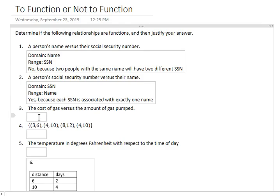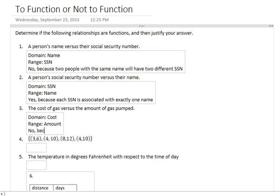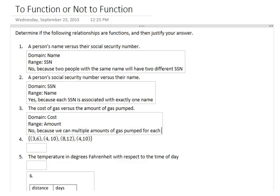The cost of gas versus the amount of gas pumped. Our domain is the cost, our range is the amount of gas. If we put in the cost of gas, let's say it's $2 a gallon, the range would be the amount of gas pumped, not the amount of money spent. I'm going to say this one is no, because we can have multiple amounts of gas pumped for each cost point for the gas. We can have someone pumping 10 gallons, 15 gallons, 1 gallon, all associated with that $2 gallon price point.